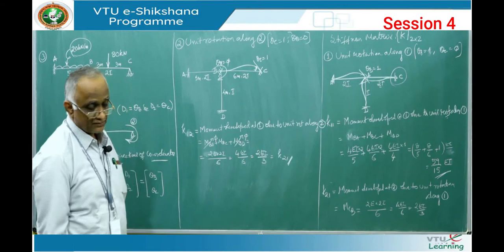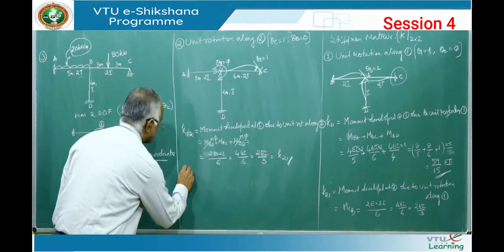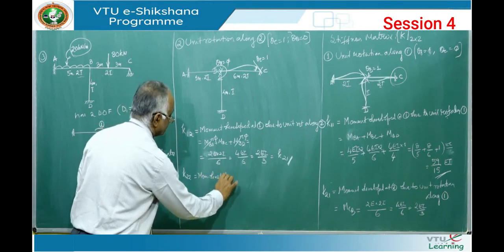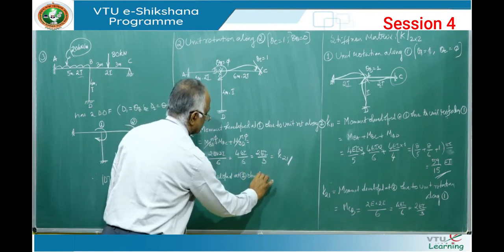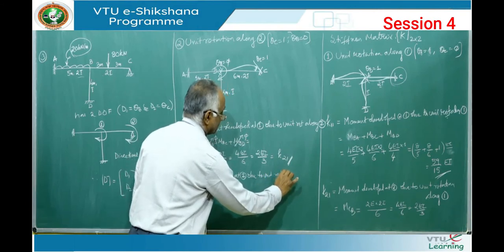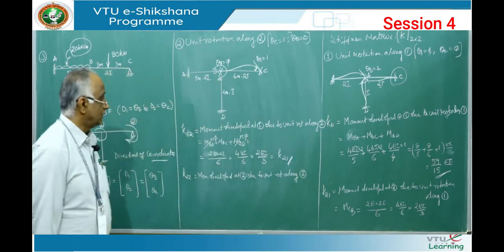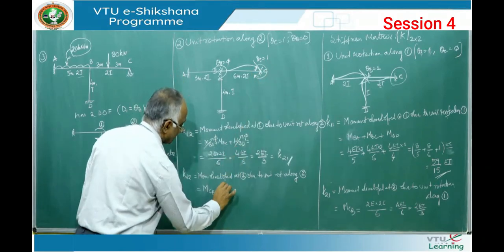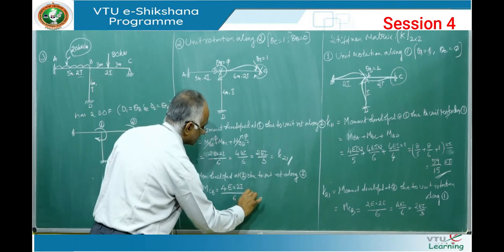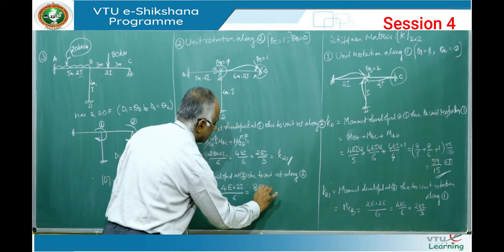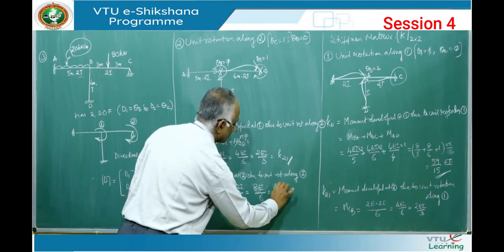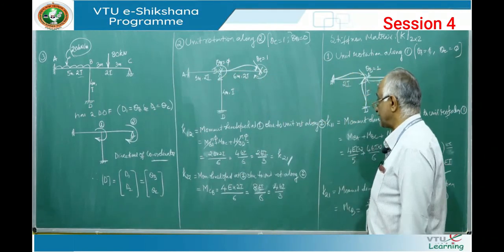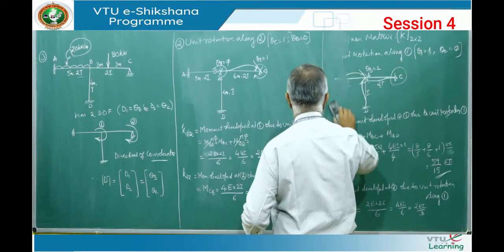The property of the stiffness matrix is that it is symmetrical: K12 = K21. For K22 — the moment developed at coordinate 2 due to unit rotation along coordinate 2 — MCB is the near end moment, so it is 4E(2I)/6 = 8EI/6 = 4EI/3. Now we have all four coefficients and can formulate the stiffness matrix.